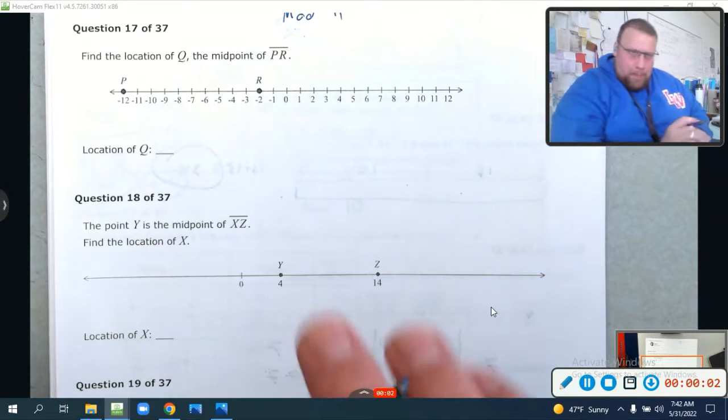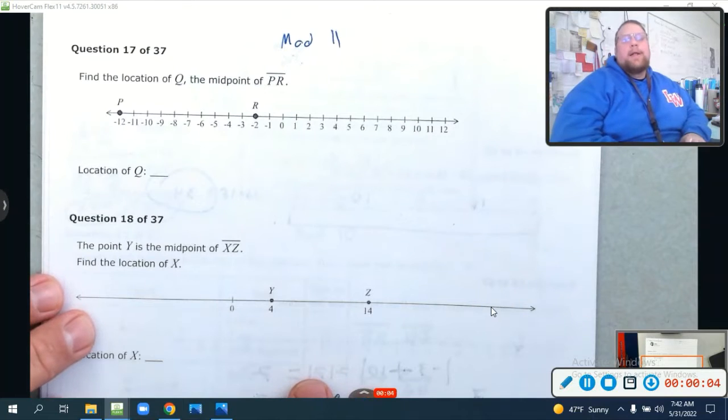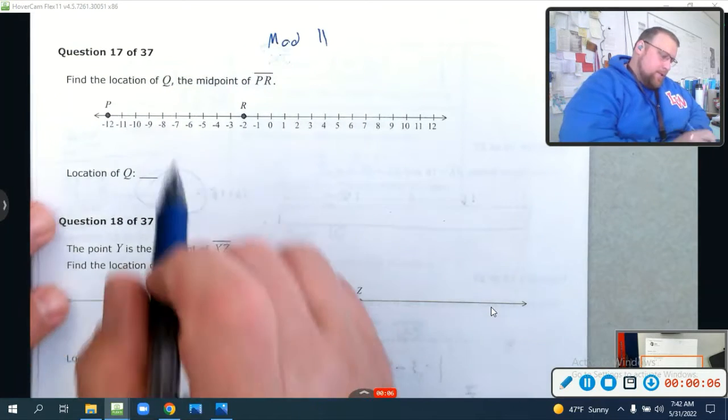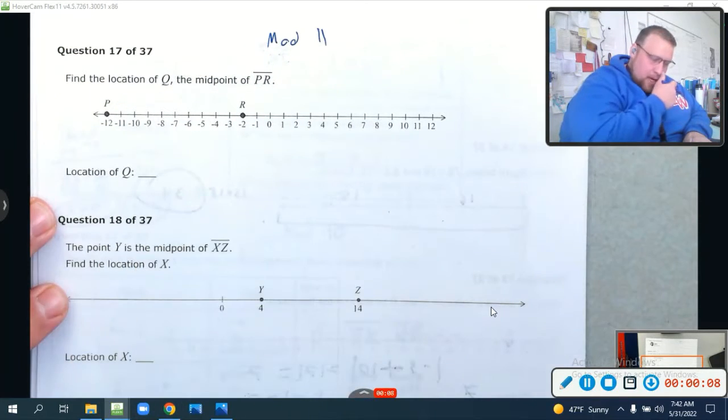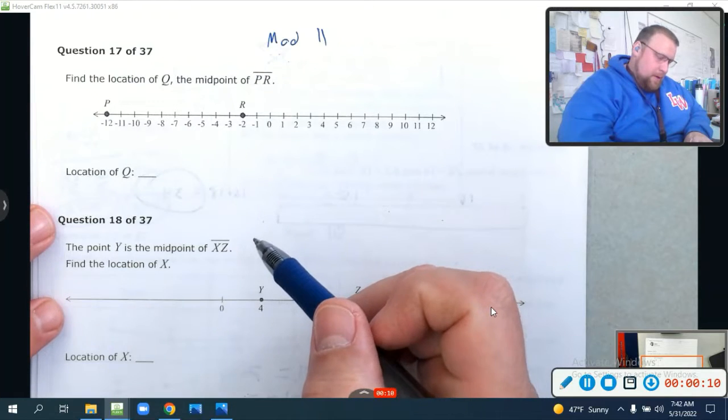What up, mathletes? Whoop, whoop. All right, we're on to the mod 11 review. Let's do this. Find the location of Q, the midpoint of PR.